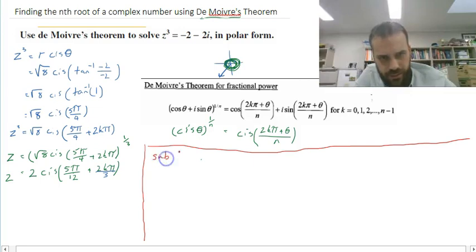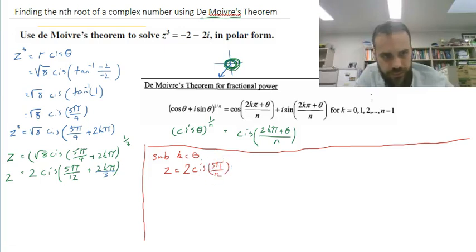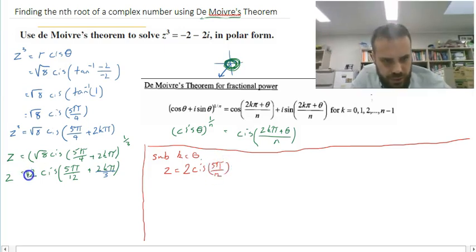First one we'll do is sub k equals 0. So that's just going to cancel out all of this stuff here. So that means that z is going to be equal to 2 cis, 5 pi on 12. Oops, root 8 to the 1 third is not 2, it's root 2. So z equals root 2 cis, 5 pi on 12.